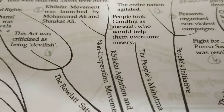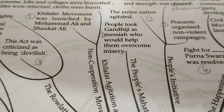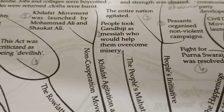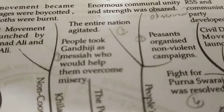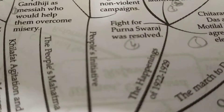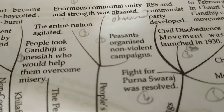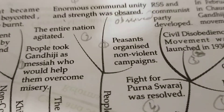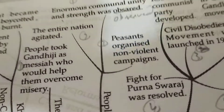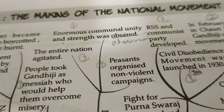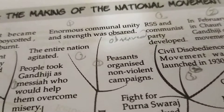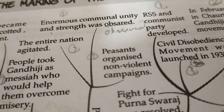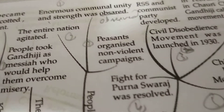Then, the People's Mahatma. People took Gandhi's message as one that would help them overcome their misery, and everyone wanted Gandhiji to visit their places. Then, the people's initiative — enormous community unity and strength was observed. The entire nation agitated, and peasants organized non-violent campaigns.